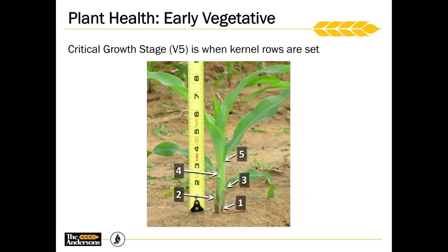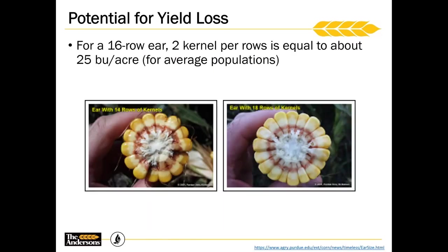The V5 growth stage in corn is incredibly important during that life cycle — it is determining the number of kernels around the ear, which has a pretty big impact on overall yield at harvest. If you have a 16-row ear, those kernels go in pairs. If you lose two kernel rows, that's about 25 bushels per acre. That is determined at V5 growth stage. If you have stresses going on at that time, the plant is not able to focus on this important development, and you're losing overall yield at harvest.